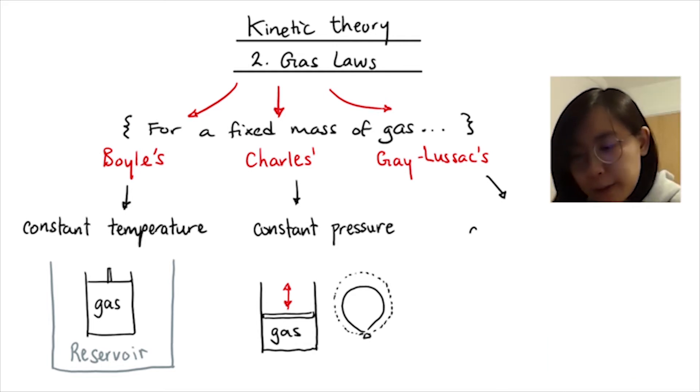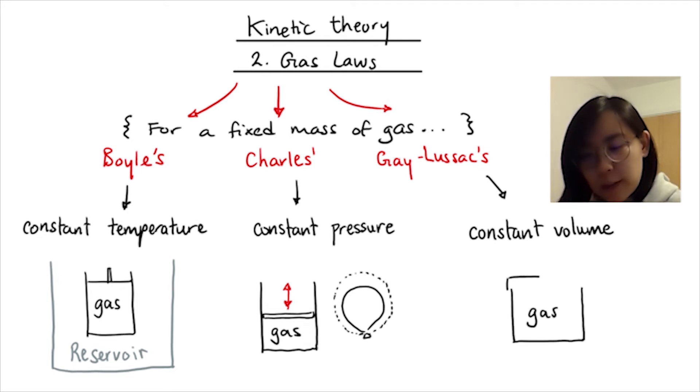And finally we have Gay-Lussac's Law, where we have a constant volume so that pressure varies with temperature. To achieve constant volume, we can seal the gas within the container with a tight lid. That's kind of like using a pressure cooker at home. So with all those conditions established, let's dive into the first law.